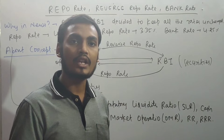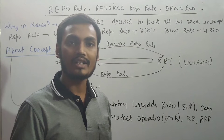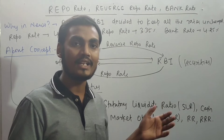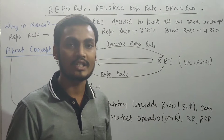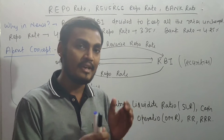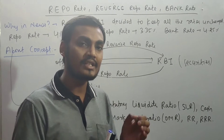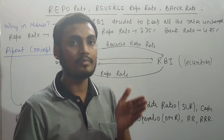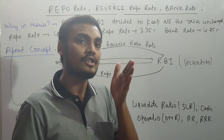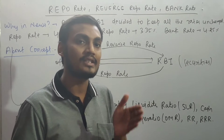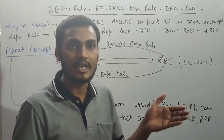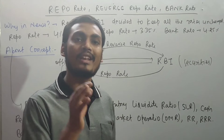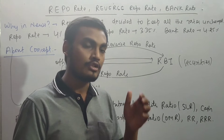Today we will talk about the Repo Rate, Reverse Repo Rate, and the Bank Rate. Recently, the Monetary Policy Committee meeting took place in which 5 members out of 6 were in favor of the accommodative stance of the RBI, and 1 member was against it.